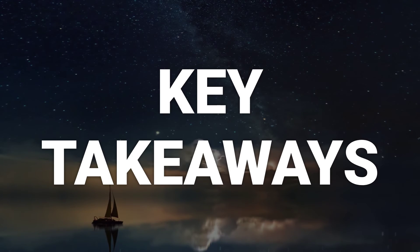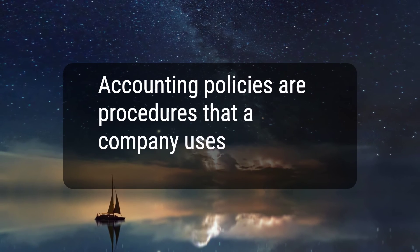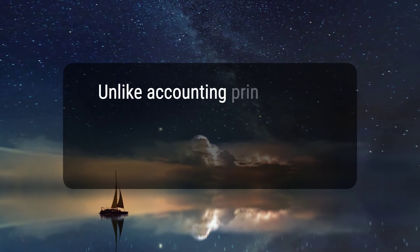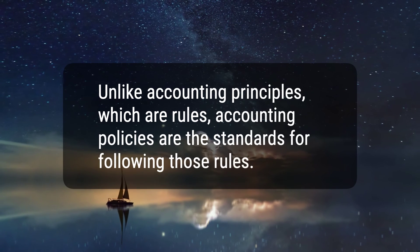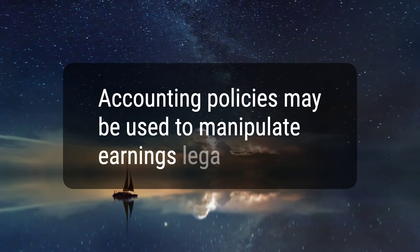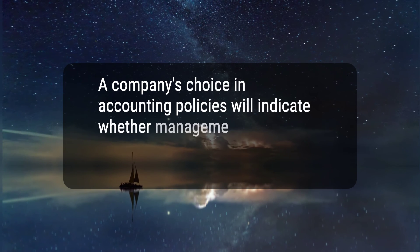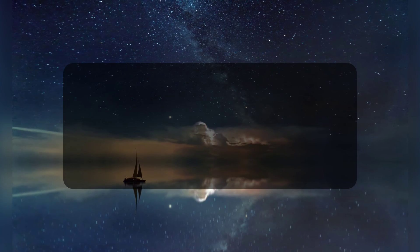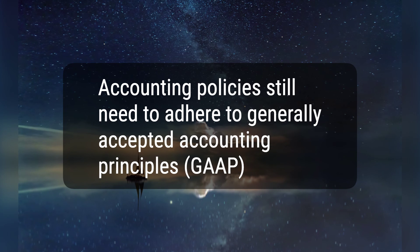Here are five key takeaways. One: accounting policies are procedures that a company uses to prepare financial statements. Two: unlike accounting principles, which are rules, accounting policies are the standards for following those rules. Three: accounting policies may be used to manipulate earnings legally. Four: a company's choice in accounting policies will indicate whether management is aggressive or conservative in reporting its earnings. Five: accounting policies still need to adhere to generally accepted accounting principles, GAAP.